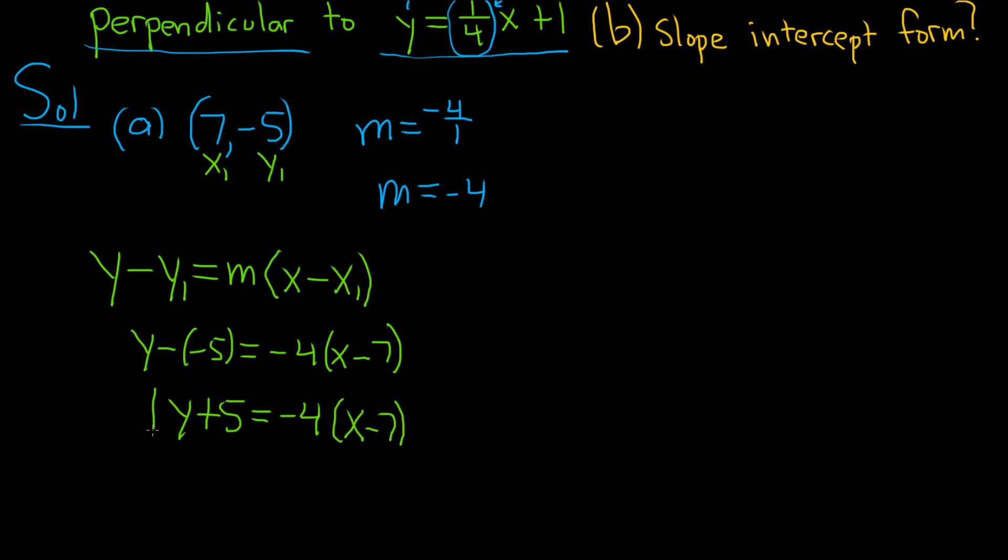If you're wondering why I didn't distribute the negative 4, it's because this is one of the answers. It wanted the point-slope form, so it wants it written in this way. It's very important. Really easy to mess that up. I honestly feel like that's the trickiest part of the problem. So just leave it like this for the point-slope form.